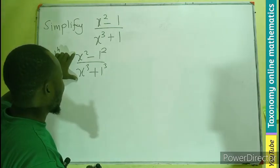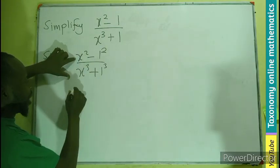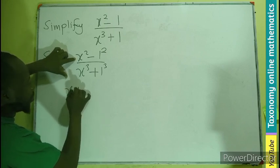So by the rules of difference of 2 squared, we are going to have x plus 1, x minus 1 for the numerator.